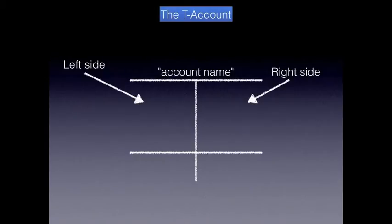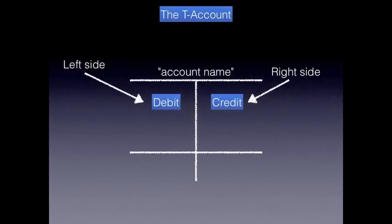The account name could be accounts payable, notes payable, common stock, retained earnings — any type of account. All T accounts have a left and a right side. No matter what type of account we're looking at, whether it's an asset, liability, or owner's equity account, the left side is always the debit and the right side is always the credit.